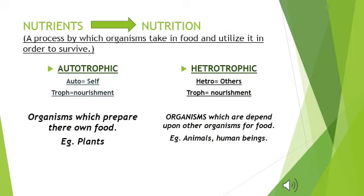You might ask: human beings can prepare their own food by cooking, so why are they considered heterotrophs? Yes, they can cook food, but the raw materials they use are obtained from plants. So they are indirectly dependent on plants for their survival, and that is why human beings are considered heterotrophs.